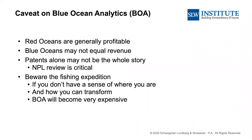A caveat here: red oceans are generally a profitable market space. Since blue ocean is defining something as nothing, you may not immediately equal revenue if you find something worth pursuing. Also, patents are not the be-all and end-all for this analysis. Looking through the scholarly literature — especially peer-reviewed work — provides an incredible amount of disclosure and detail where a patent may have omitted that or simply referred to it. I try to look at NPL references in patents and also do external searches as I go through.